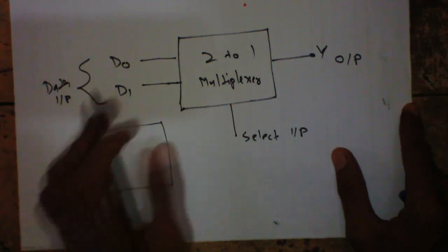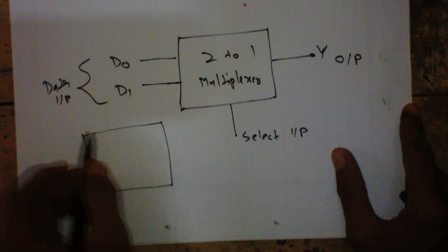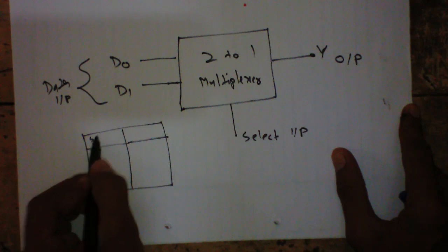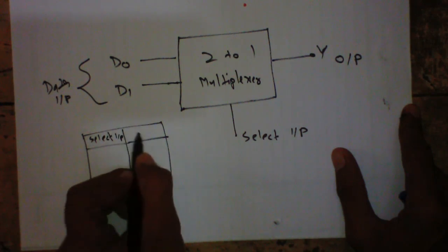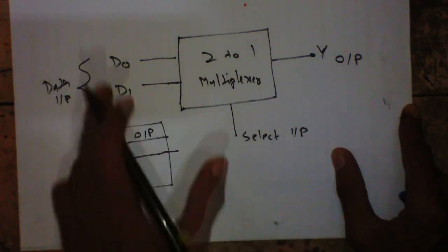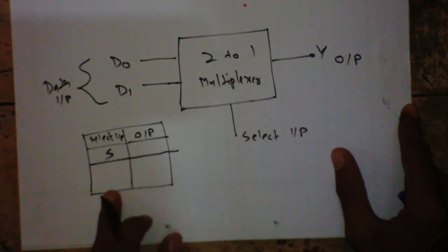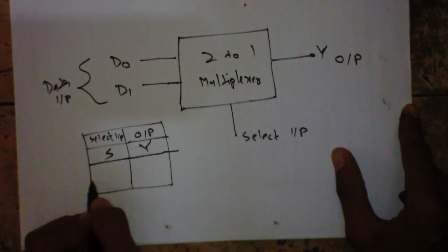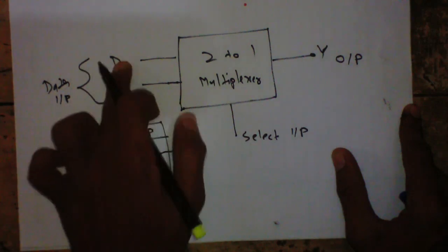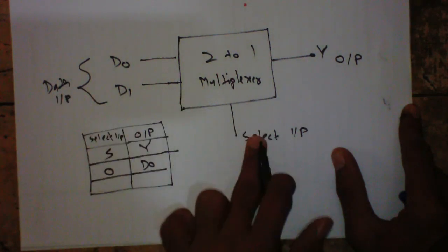We will calculate the truth table with respect to the select input, not with respect to a given output. In a 2-to-1 multiplexer we have only one select input, so there is only one column S and one output Y. When S is 0, output will be D0, and when S is 1, output will be D1.